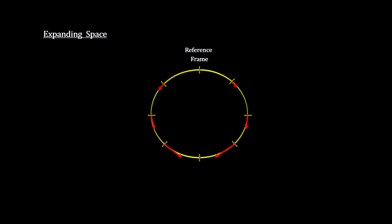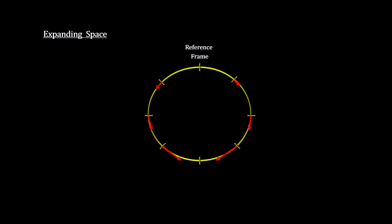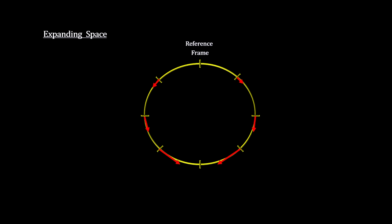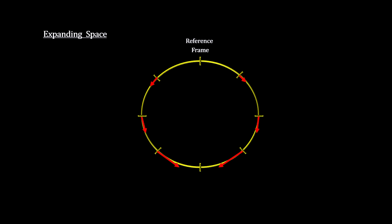But if the apparent motion is due to the amount of space expanding, we get a different picture. Here the marks hold their position on the line, but the line grows.